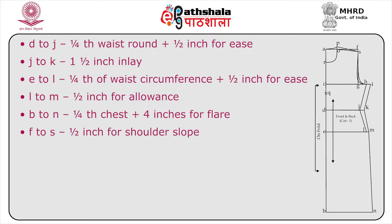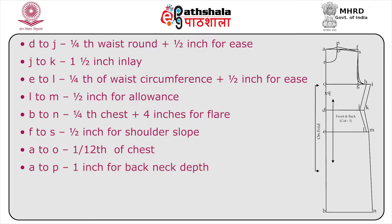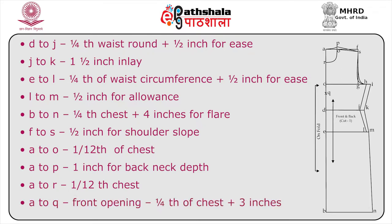F to S is half inch for shoulder slope. A to O is one-and-a-half inch for back neck depth. A to R is one-and-a-half inch for back neck depth. A to Q (front opening) is one-fourth of chest plus three inches.